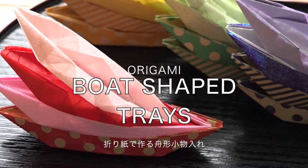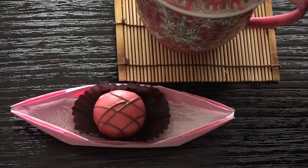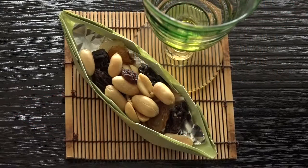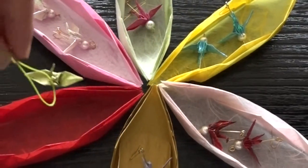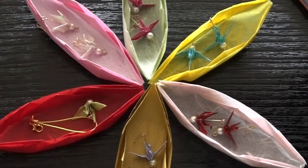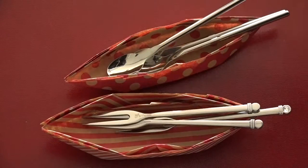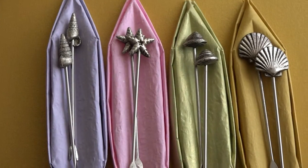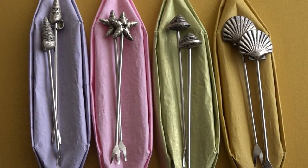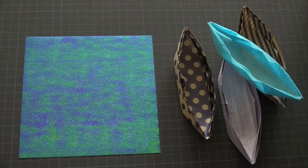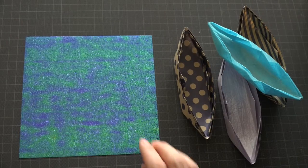In this video, I'd like to show you how to make origami bolt-shaped trays. They are simple to make and useful. Prepare a piece of square origami paper and put it color side up.